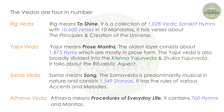Yajurveda — 'Yajur' means prose mantra. The oldest layer consists of about 1875 hymns, which are mostly in prose form. The Yajurveda is also broadly divided into the Krishna Yajurveda and the Shukla Yajurveda. It talks about the ritualistic aspect.